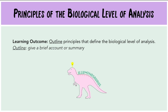The command term 'outline' means to give a brief account or summary, which means it is a short answer question — it will only come up in section A of paper 1. There are three principles that define the biological level of analysis, but it is rarely the case that the question asks you to outline three principles. I advise you to know two really well and just know that the other principle exists — meaning know the principle and know a study that corresponds to it.